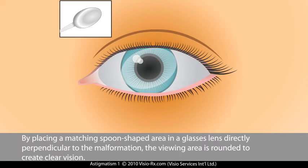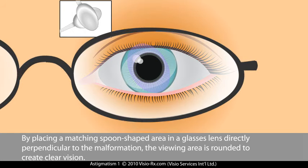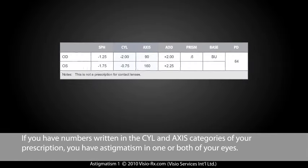By placing a matching spoon-shaped area in a glasses lens directly perpendicular to the malformation, the viewing area is rounded to create clear vision. If you have numbers written in the sill and axis categories of your prescription, you have astigmatism in one or both of your eyes.